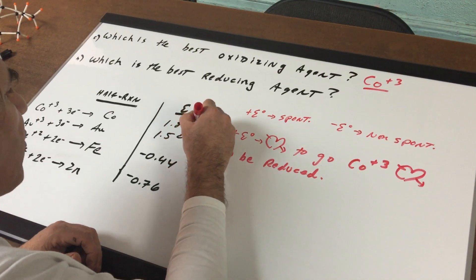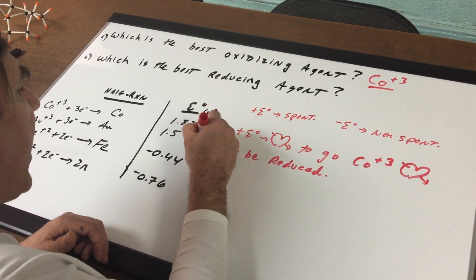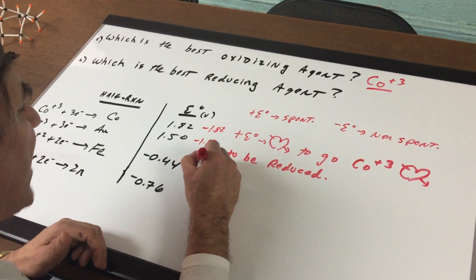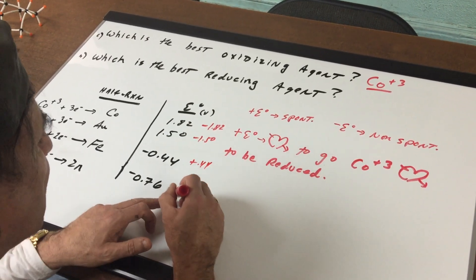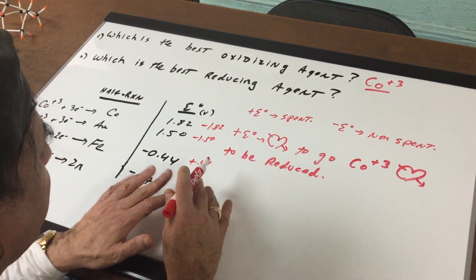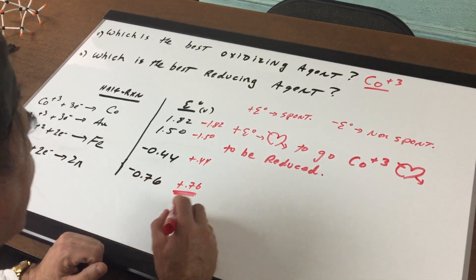So that would put this at negative 1.82, negative 1.50, positive 0.44, and positive 0.76. So that means that this reaction in reverse would be the most positive.